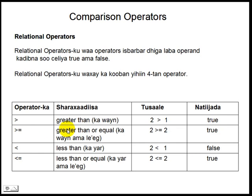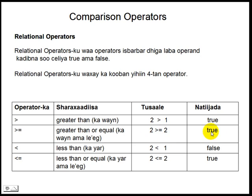Operator ka kuhiga magiciisu waa greater than or equal to, oo afsomaali ko ah kowwain ama la ag. Tusaalihi sana waa two is greater than or equal to two, waxaa lo akhriaa sidhan: lambar kan labo makawwain ya hay amammal la ag ya hay lambar kan kale ee issaguna ah labo. Jawabtu wa haa sababtu ah labadha lambar makalawwain bal saway isli agyihin, sidaas darteed natiijadu wa true.